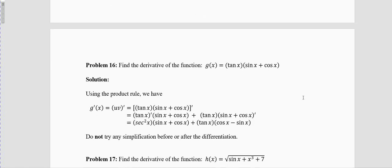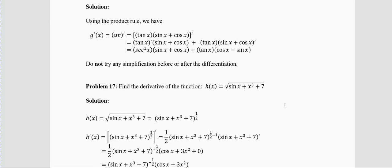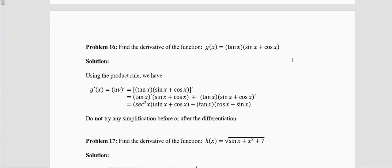Problem 16: g(x) = tanx · (sinx + cosx). Even if you know some trigonometry, do not try to simplify this — just treat it as a product of two functions. First function is tanx; second function is (sinx + cosx). Derivative of tanx is sec²x; copy the second function. Plus first function into derivative of second: derivative of sinx is cosx, derivative of cosx is −sinx. Do not try any algebra before or after differentiation.